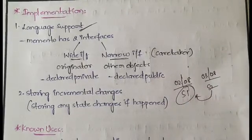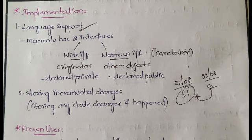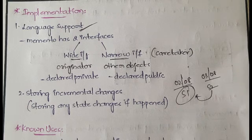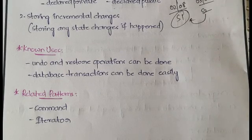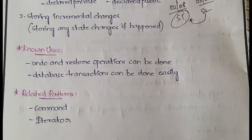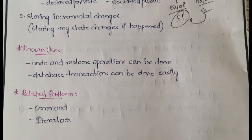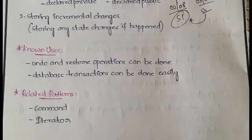Each day if there is another state change, that must be updated incrementally as well. The known uses of the Memento pattern include undo and restore operations, and also database transactions such as commit and rollback. The related patterns to Memento are the Command pattern and the Iterator pattern. Videos on Command and Iterator are already available on the channel.